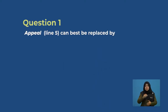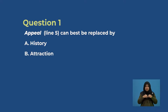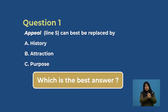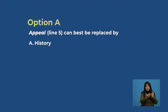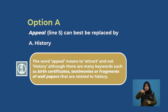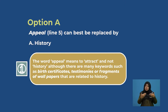Question one: 'Appeal,' line five, can best be replaced by — A, history; B, attraction; or C, purpose? Think carefully before you pick the correct option. Let's look at option A. The word 'appeal' means to attract and not history, although there are many keywords such as birth certificates, testimonies or fragments of wallpaper that are related to history. Therefore, option A cannot be accepted.